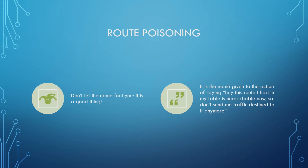Moving on to route poisoning — do not let the name fool you, route poisoning is actually a good thing. It's the term given to the action of saying: 'This route I had in my table is now unreachable — don't send me traffic destined to it anymore.' Route poisoning is simply a term used to indicate that a route is no good, or 'poisoned.'